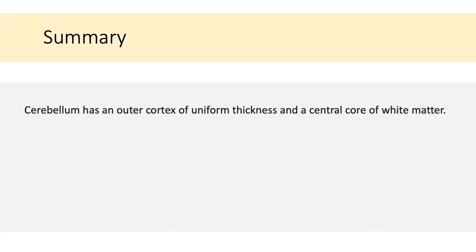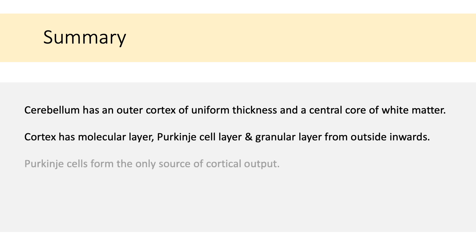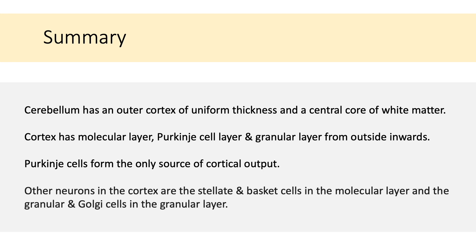So, quickly recalling what we have seen so far. Cerebellum has an outer cortex of uniform thickness and a central core of white matter. Cortex has a molecular layer, Purkinje cell layer and granular layer from outside inwards. Purkinje cells form the only source of cortical output. Other neurons in the cortex are the stellate and basket cells found in the molecular layer and the granular and Golgi cells found in the granular layer.